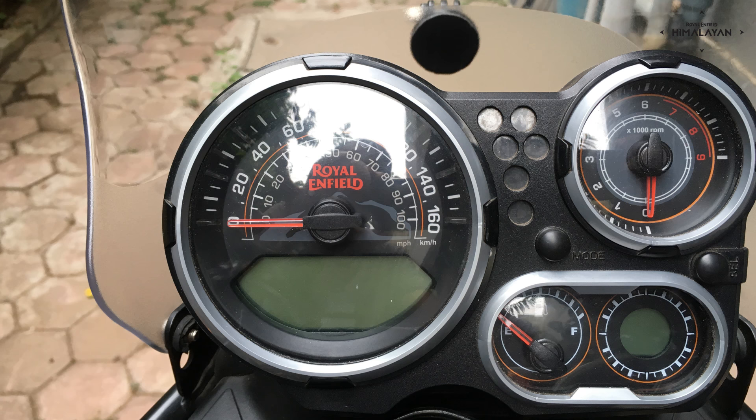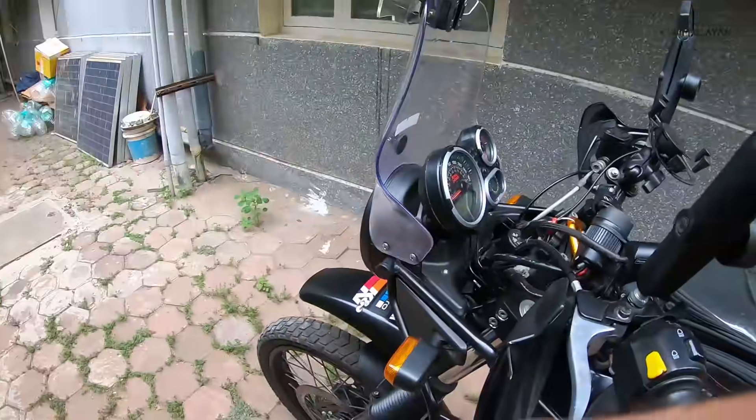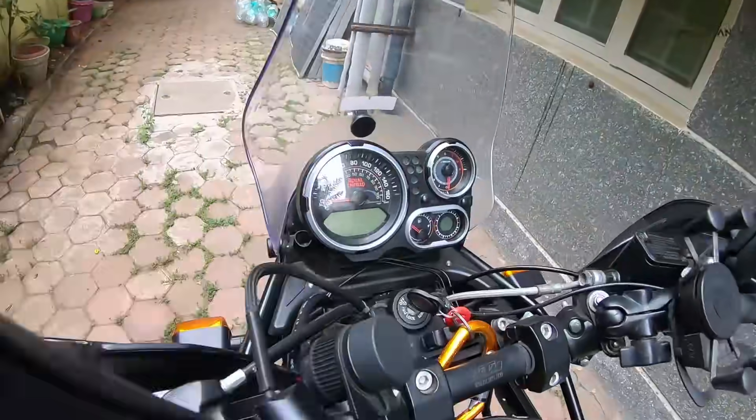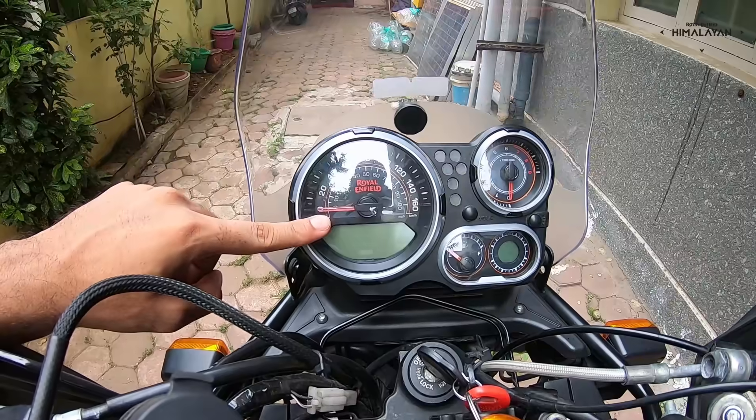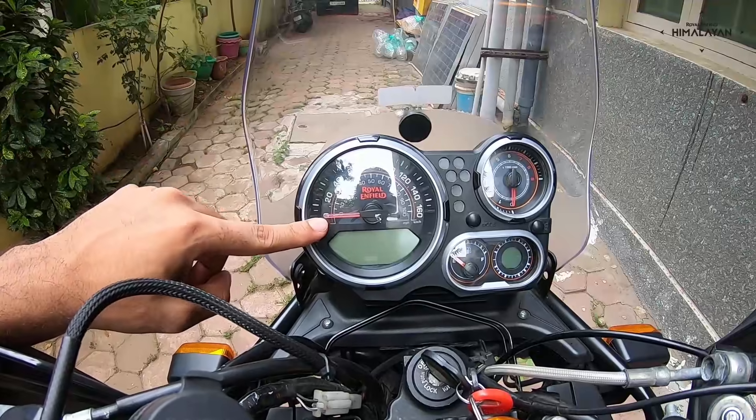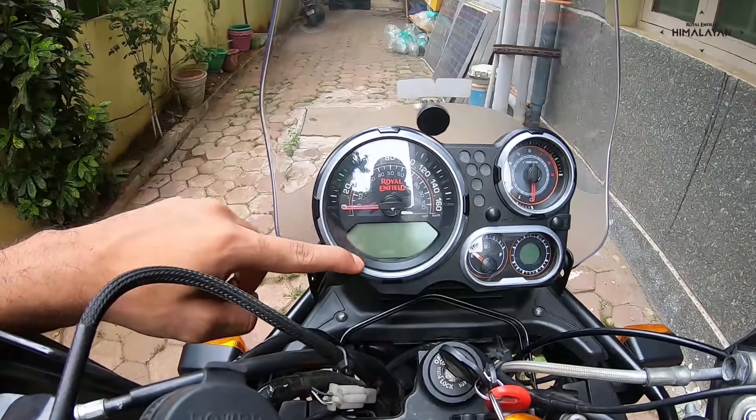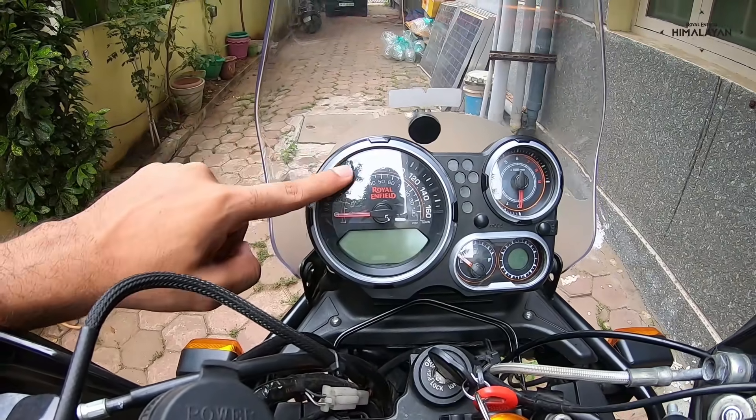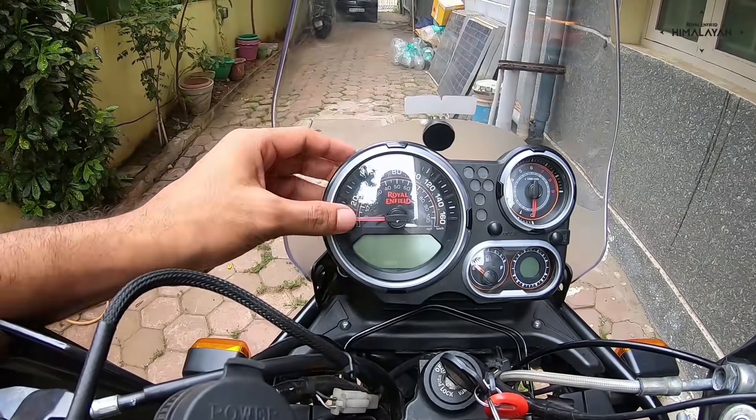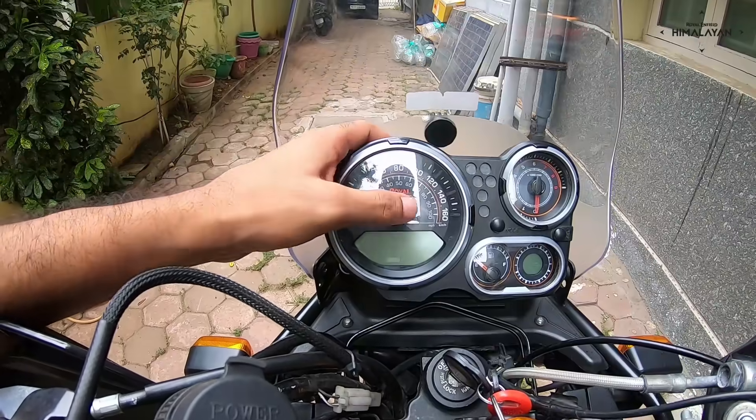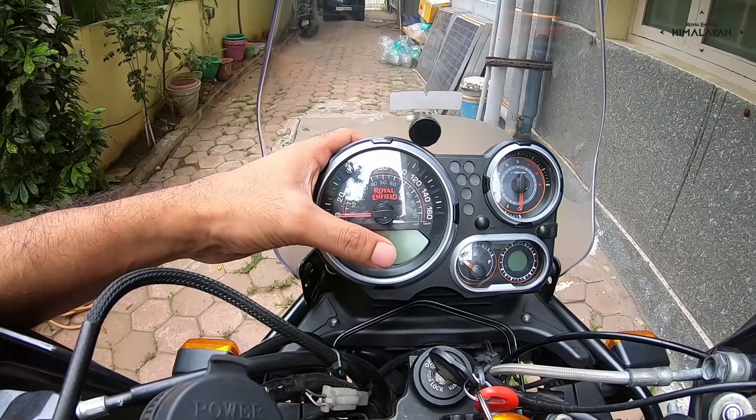Hi friends, today's video is about the Himalayan's cluster or speedometer. As we all know, it has a tendency to leak water into it, and most of the times even if it's not raining heavily, there's just a gentle shower, there is an accumulation of moisture inside which clouds the screen.